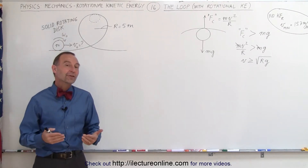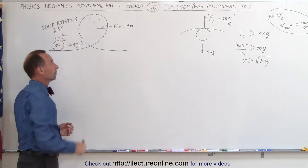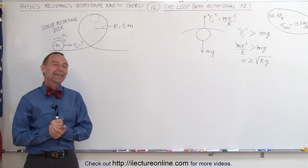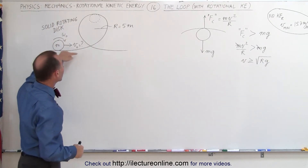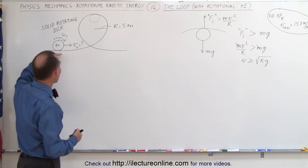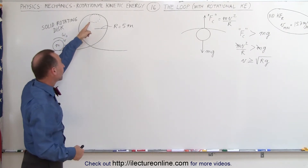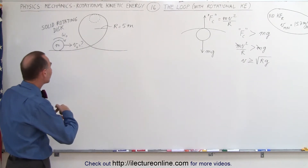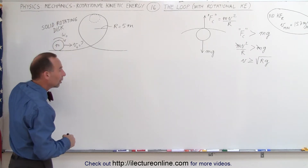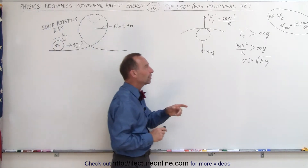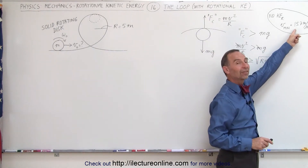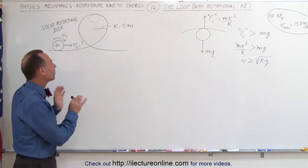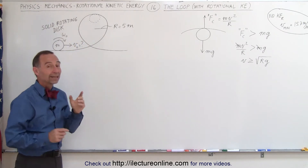Welcome to ElectronLine. Here's the second video where we have the object going around the loop like this, and again we're trying to find the minimum velocity at the bottom so that it doesn't fall off when it gets to the top. The difference between this video and the previous video is that here we have a rotating object, whereas we had a sliding object in the previous video. Remember the result from last video was that the minimum velocity there was 15.7 meters per second. Now we're going to find what the minimum velocity of this rotating object should be so that it doesn't fall from the top.